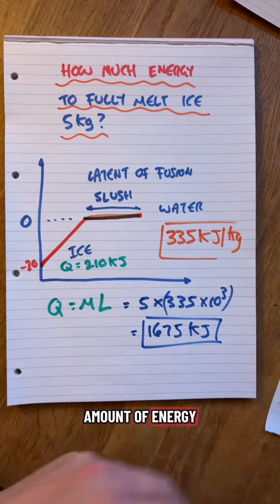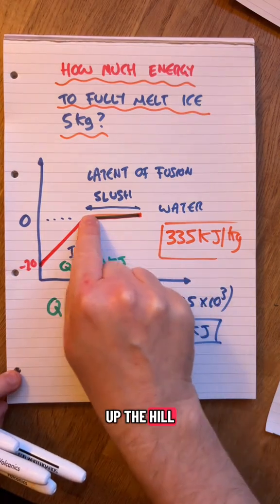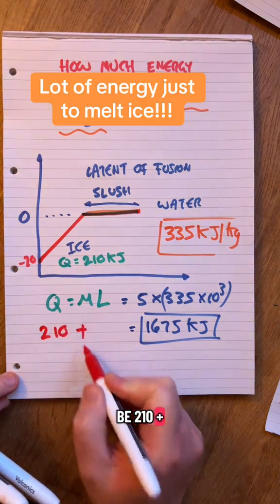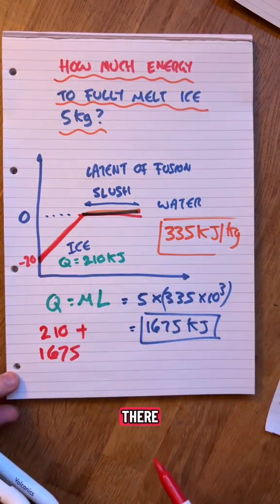So the total amount of energy needed to go from minus 20 all the way across to fully water is going to be 210 plus 1675. Up there, across there.